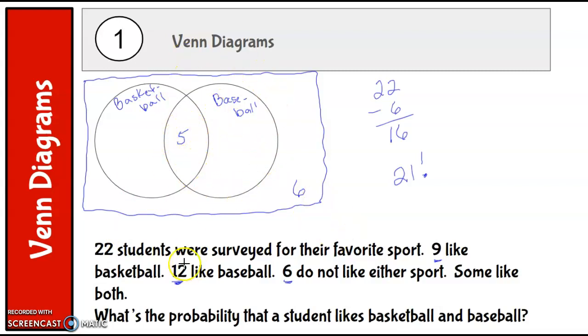So let's put 5 here and see if that works out. So if there are 5 here, then in the whole circle there's supposed to be 12 that like baseball. So 12 minus 5 is 7. So that would be 7 in the baseball. And then there are 9 that like basketball, so that means there has to be 4 here because 4 plus 5 would be 9. And if we add that all up, does that give us the right number?